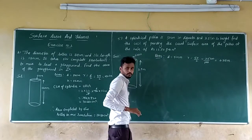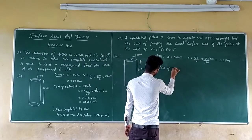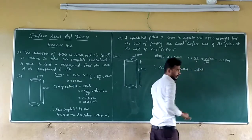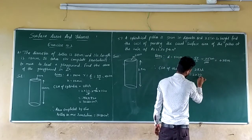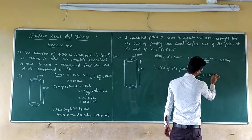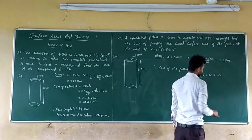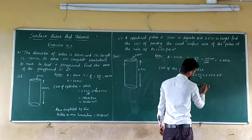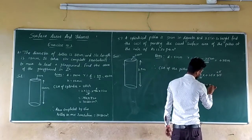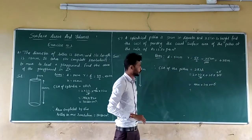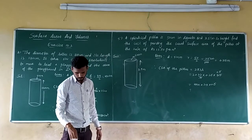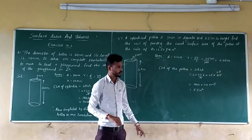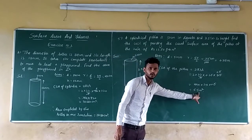Find the CSA of the pillar. CSA equals 2πrh, so 2 into 22/7 into radius 0.25 into height 3.5. That gives 2 into 22 = 44, into 0.25 into 0.5 (since 3.5/7 = 0.5). Multiply 44 into 0.25 into 0.5, you get 5.5 m². So CSA of the pillar is 5.5 m².